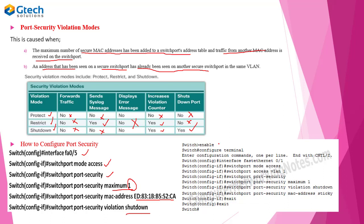In the second scenario, we do the same thing — enter the interface, set it as access mode, optionally specify a VLAN, enable port security, set maximum MAC addresses to 1, set violation mode to shutdown, and then for the MAC address we use the sticky command instead of entering it manually.